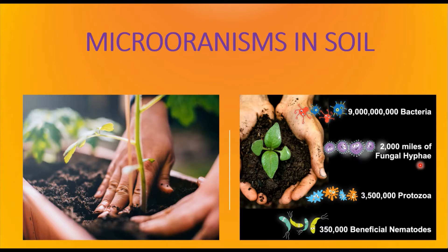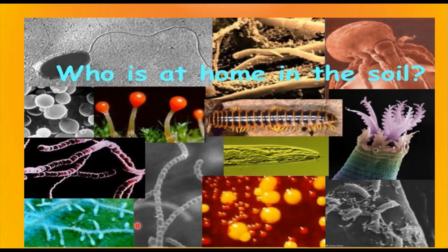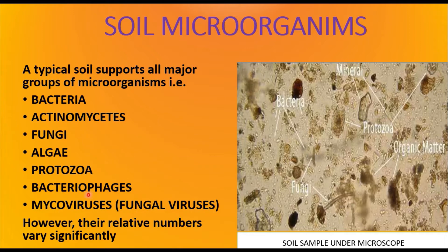The vegetation supported by the soil also influences the occurrence of microorganisms. The organic matter provided by vegetation and root exudates exert a significant effect on diversity as well as density of microorganisms in that specific soil location. A typical soil supports all major groups of microorganisms such as bacteria, actinomycetes, fungi, algae, and protozoa, along with bacteriophages and mycoviruses, which are called fungal viruses. The relative numbers vary significantly depending upon the physical and chemical characteristics.